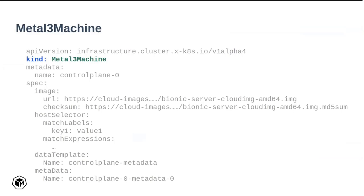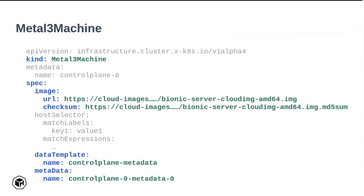The next item is Metal Cube Machine, which defines how the Kubernetes node would be deployed. In the spec, the first thing is the image reference — you give a URL to an image, like a QCOW2 image, and the checksum so Ironic can deploy the node with that specific image. There's also a host selector allowing you to choose which bare metal host to deploy on. Additional available fields include a data template to pass templates for metadata that will be included in user data, and for network configuration applied by Ironic through cloud-init. You can also directly provide metadata and network data fields for fine-grained control over the deployment.